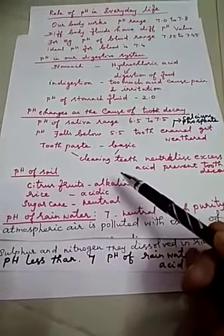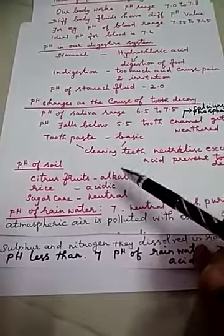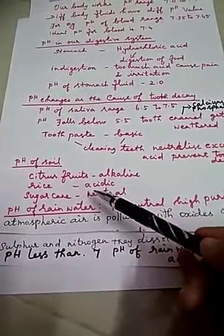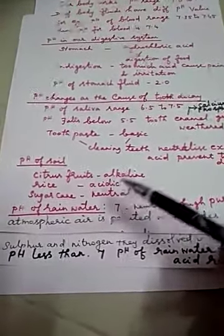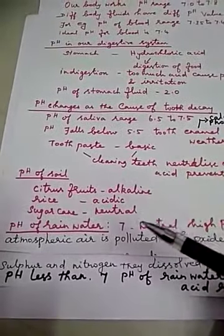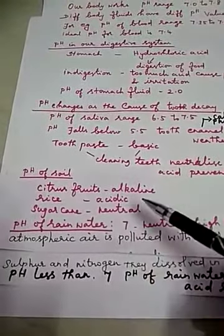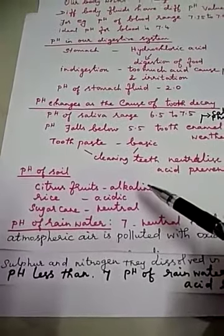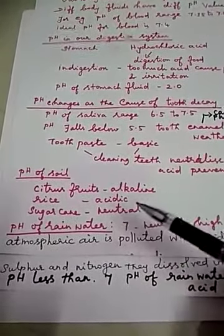The pH of the soil is very important in agriculture. Citrus fruits such as lemon and orange require slightly alkaline soil. Rice requires acidic soil, and sugarcane requires neutral soil — meaning neither acidic nor basic in nature.